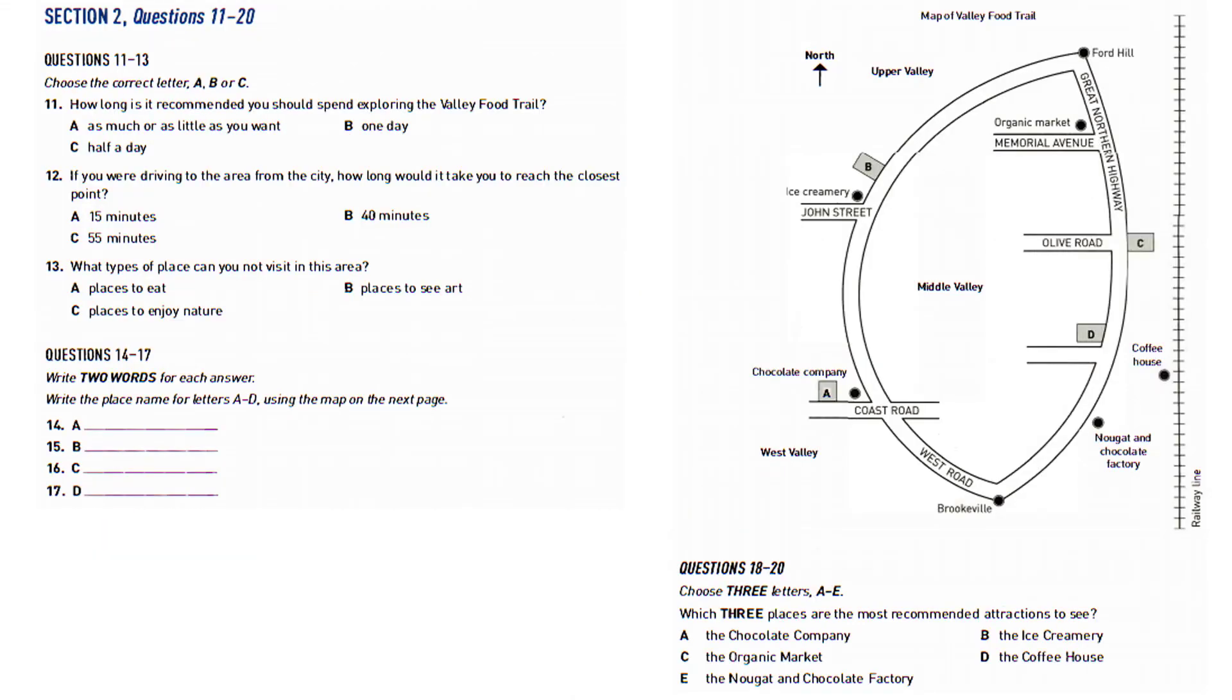Now turn to section two. Section 2. You will hear a recorded message giving information about an area where tourists can visit to taste local food. First, you will have some time to look at questions 11 to 13.